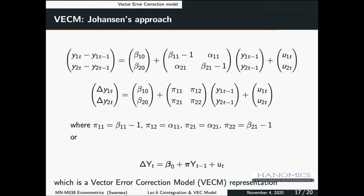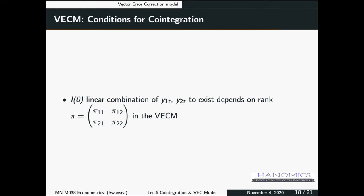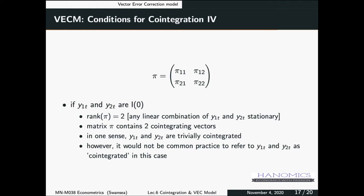What we are interested in with the Johansen test for cointegration — to know whether we have cointegration or not — we need to test the rank of this pi matrix. That was just a simple example to remind you what we mean by the rank of a matrix. The condition that Johansen showed us is that for a stationary I(0) linear combination of Y1 and Y2 to exist, we need to check the rank of this pi matrix.